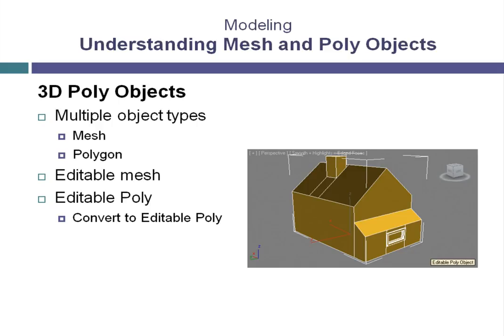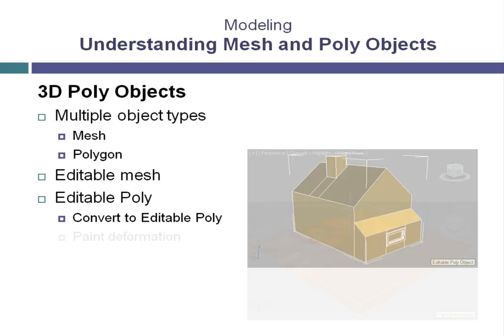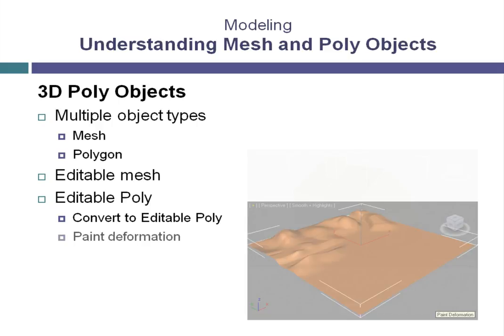We will then use the graphite modeling tools to learn about a procedure called paint deformation, where we will actually paint hills on our editable poly landscape.